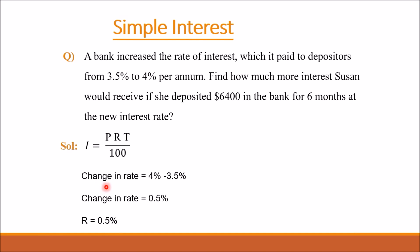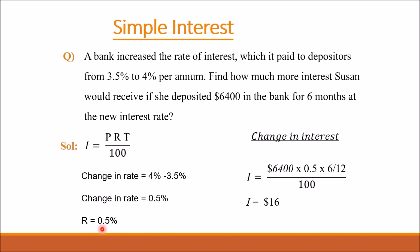The change in rate is 4% minus 3.5%, giving a result of 0.5%. So we take R equal to 0.5%. To find the change in interest, we apply the formula I equals PRT over 100. The principal amount P is given as $6400, and the change in rate of interest, 0.5, is used here instead of the original rate.